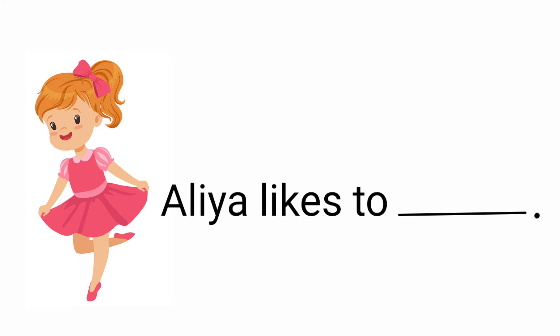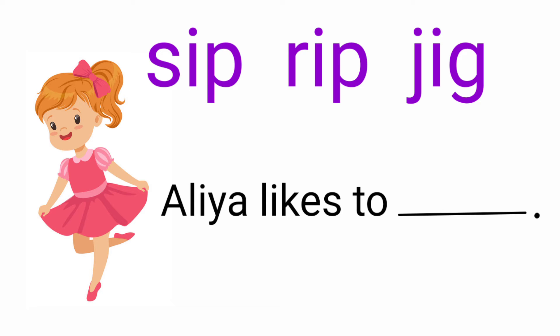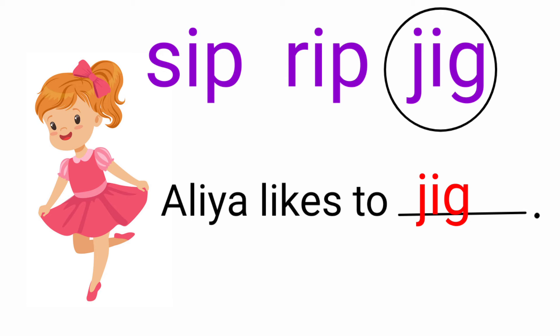Look at the next picture — there is a girl dancing. Her name is Alia. Let's read the incomplete sentence: Alia likes to dash. The given words are sip, rip, jig. So here the suitable word is jig. First we need to circle the word jig, and then write it to the sentence: Alia likes to jig.